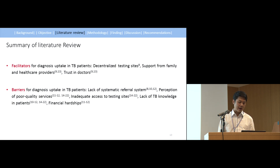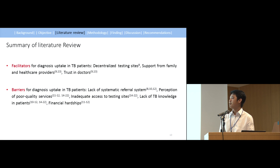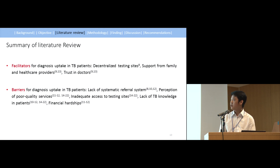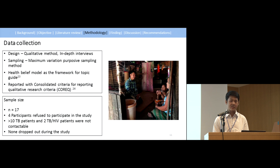Before conducting our study, we did a literature review identifying barriers and facilitators for diagnosis. Facilitators included decentralized testing sites, support from family and healthcare providers, and trust in doctors. Barriers included lack of systematic referral assistance, perceptions of poor quality services, inadequate access to testing sites, lack of TB knowledge in patients, and financial hardships. Since we were interested in understanding the experience of patients, families, and service providers, qualitative research became the most applicable method. We used in-depth interviews with three different topic guides for patients, caregiver families, and service providers.